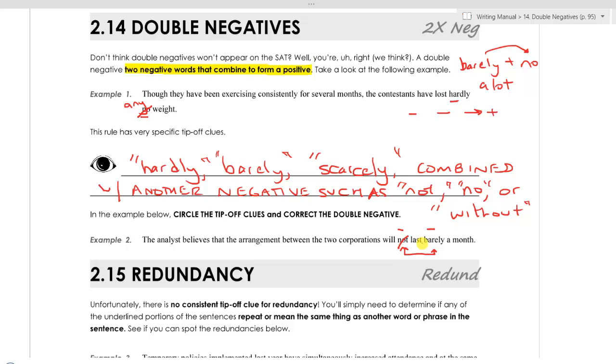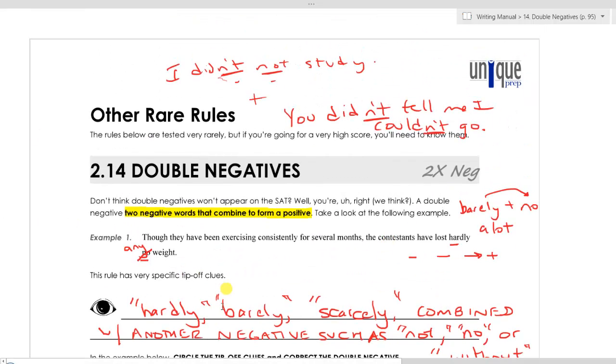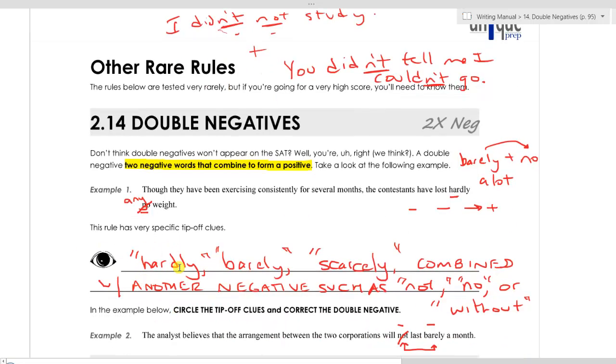The day of the test, ETS will not underline each of those negatives individually, and then force you to decide which one to get rid of. They will not do that to you. They will either underline both of them together, or they will just underline one of them. That is all for double negatives. This very quick rule should be very simple as long as you remember your tip-off clues. See you next time.